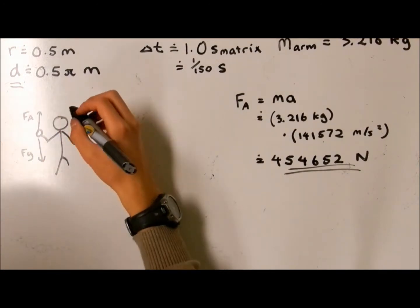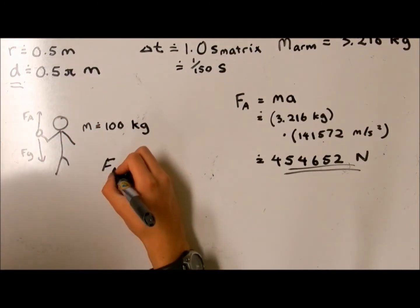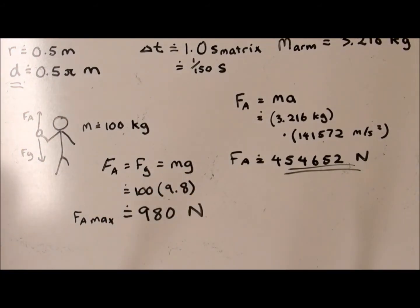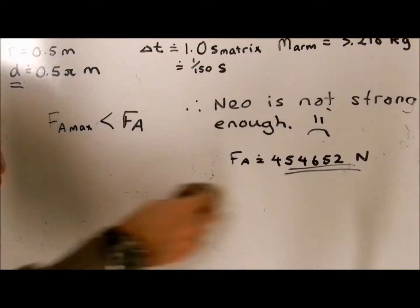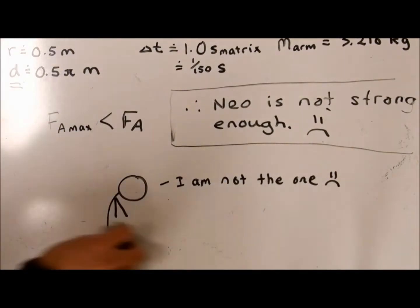The maximum weight lifted by one human arm is around 100 kilograms, which would have required a force of 980 Newtons. Therefore, Neo is not strong enough to dodge bullets.